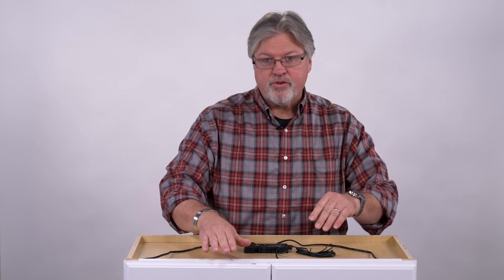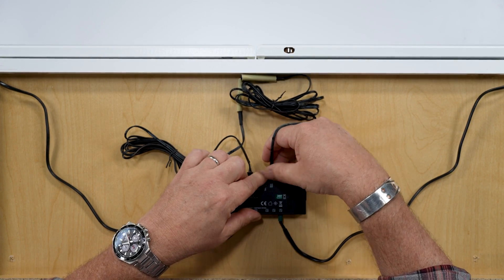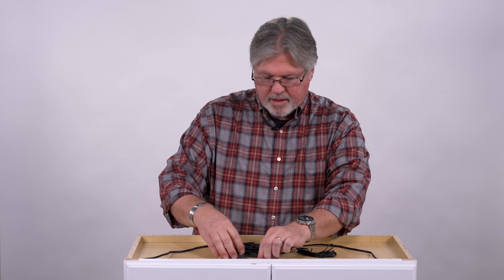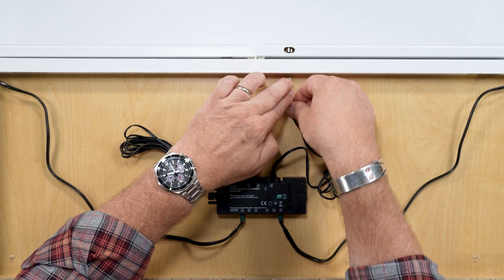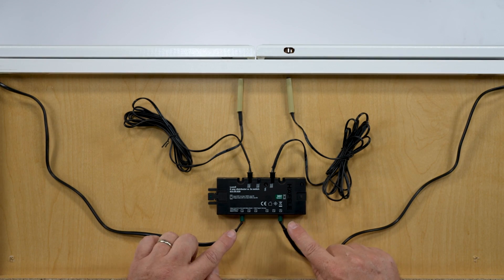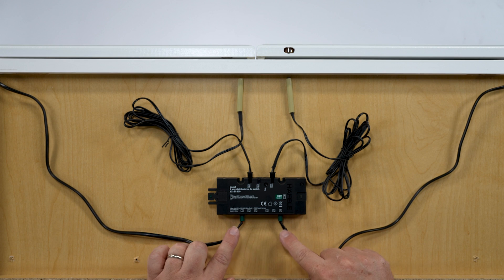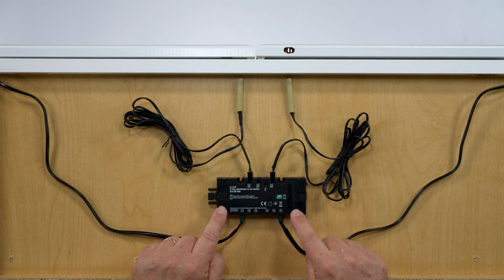Let's add another one over to this side. So in this application, we have got two lights, one on either side of the cabinet, that are plugged into our six-way distributor.